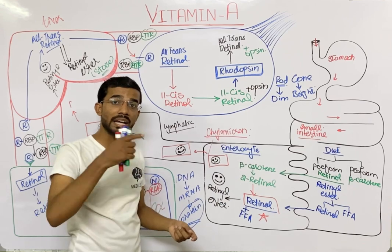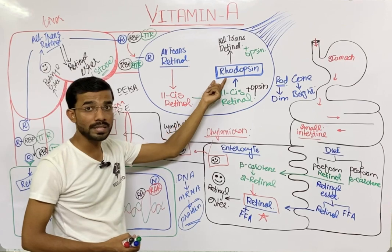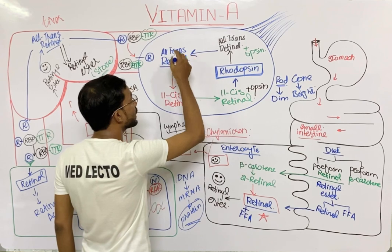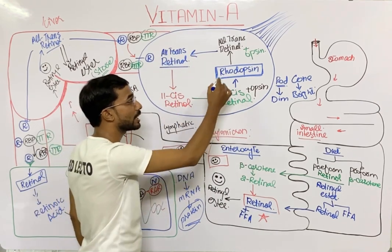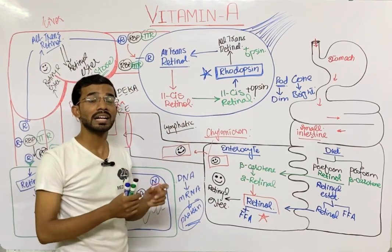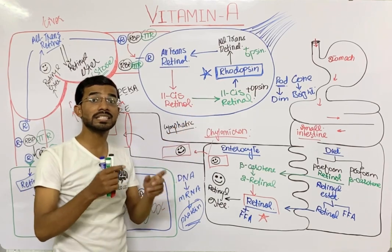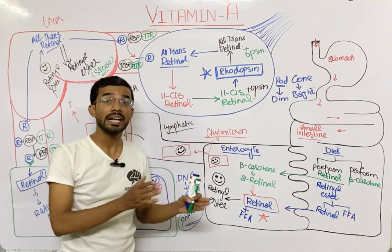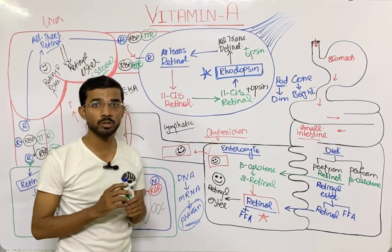When a person comes back into dim light, rhodopsin is needed again. The all-trans retinol converts back into 11-cis retinol, and ultimately rhodopsin is reformed, allowing the person to see in dim light again — though this regeneration takes some time.